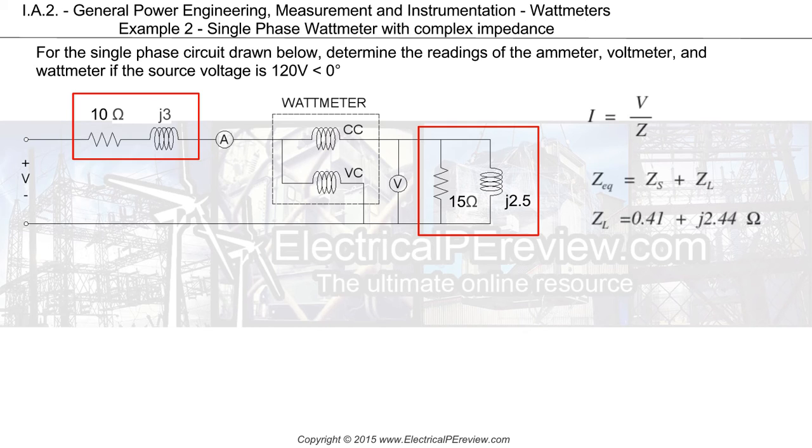Now that we have our parallel load impedance, we can combine that with our series impedance to arrive at a total circuit impedance of 10 + j3 + 0.41 + j2.44 ohms. This yields a total circuit equivalent impedance of 10.41 + j5.44 ohms in rectangular form.